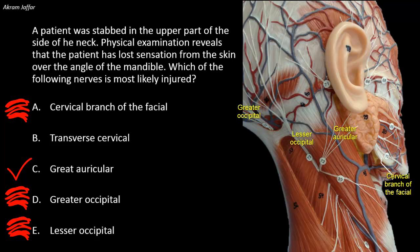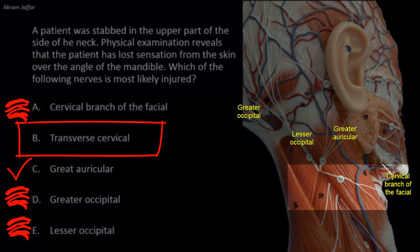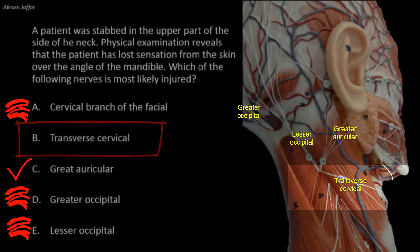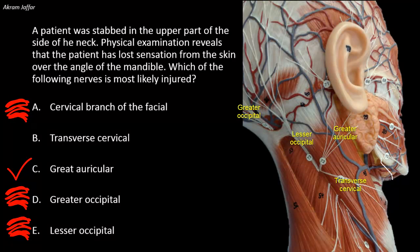Regarding the transverse cervical nerve, this is also derived from C2 and C3, but it passes transversely from behind the posterior border of the sternocleidomastoid to supply the skin over the anterior triangle of the neck, from the chin to the sternum, and is not related to the skin over the mandible.